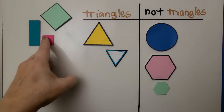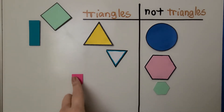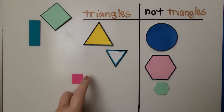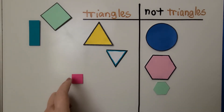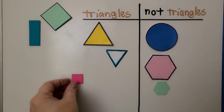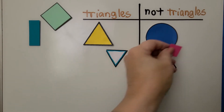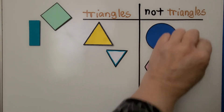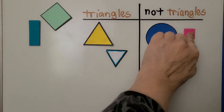Is this a triangle? It has one, two, three, four straight sides. That's not a triangle. That's a square. We need to put it with not triangles.